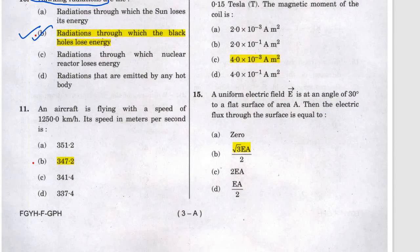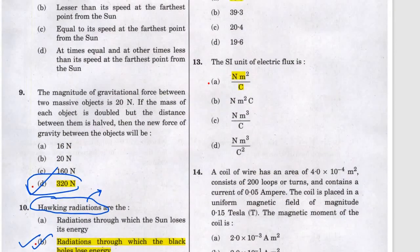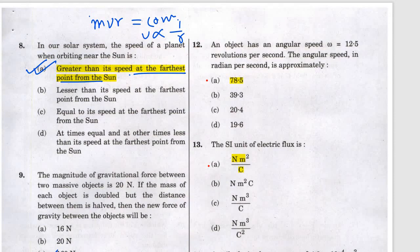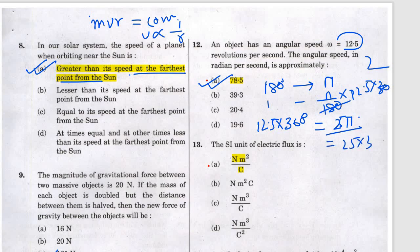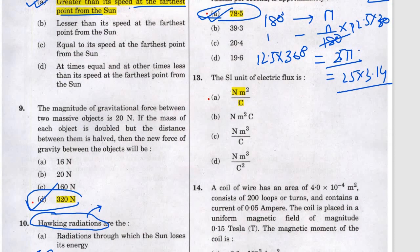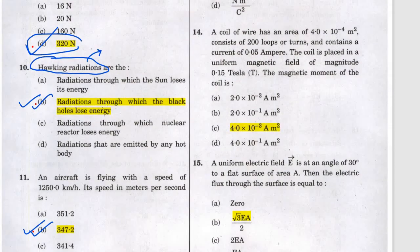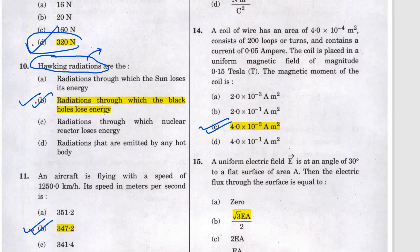Question eleven answer is b. Question twelve: they are asking about angular speed in radians — 1 degree equals pi over 180. So 12.5 into 360 degrees equals 12.5 times 360, giving 25 pi, and 25 times 3.14 gives approximately 78.5. Question thirteen: the SI unit of electric flux — answer is a. Question fourteen answer is c — put r minus 1 into the formula, multiply all three data values; the magnetic field is not needed.